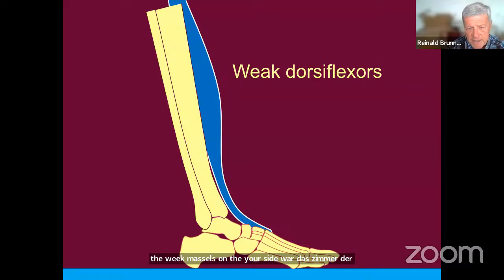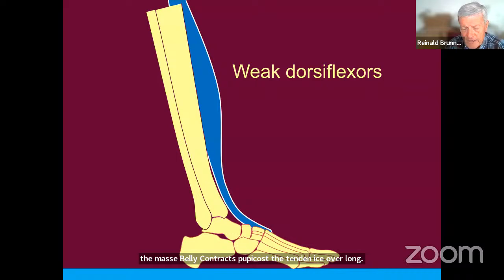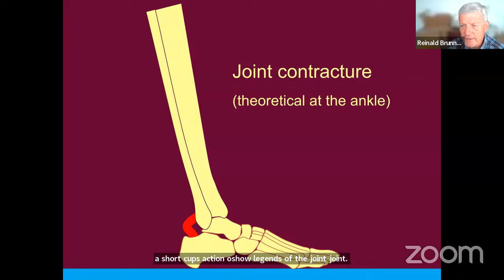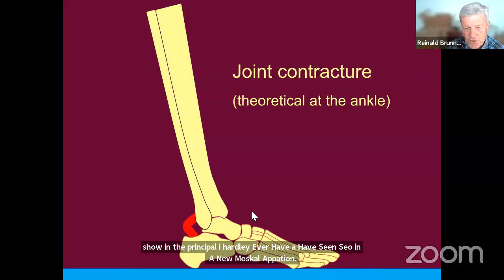Using a foot position scheme as an example: normal foot is flat at initial contact, but sometimes the foot is plantar flexed. The possible reasons are functionally short muscles, structurally contracted muscles, or simply overactive muscles. On the other side, muscles can be weak. If the tendon is overly long, the muscle belly contracts but has no effect on joint movement. Short joint capsule or ligaments are a third, more theoretical option at the ankle.